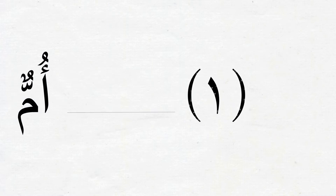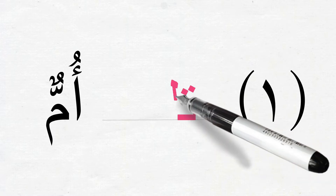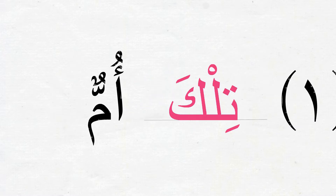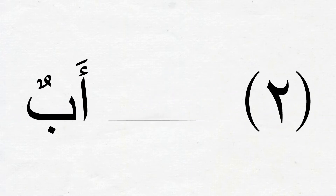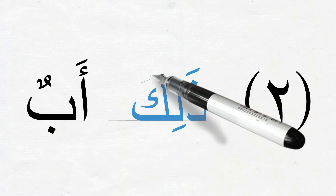Let's start. Number 1: أُمٌّ means 'a mother'. How do we say 'that is a mother'? تِلْكَ أُمٌّ. Number 2: أَبٌ means 'a father'. We want to say 'that is a father', so it will be ذَٰلِكَ أَبٌ.